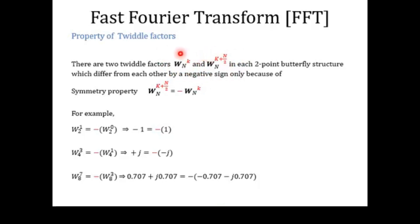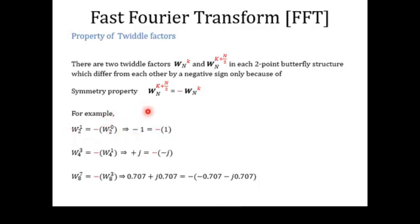If you compare the values of both twiddle factors, you find only a difference of sign between them: WNK+N/2 is simply negative WNK. You can verify this by substituting different values of N and K. For example, at the two-point DFT stage, we have twiddle factors W₂⁰ and W₂¹. W₂¹ equals -1 while W₂⁰ equals 1, confirming that W₂¹ is the negative of W₂⁰.